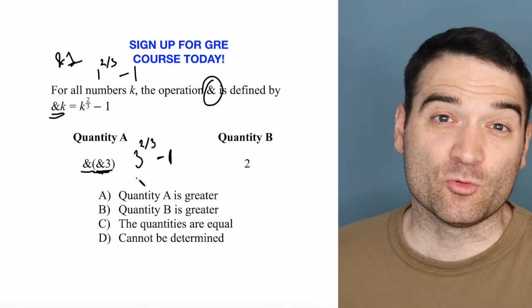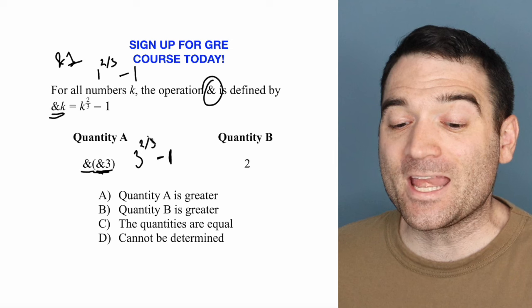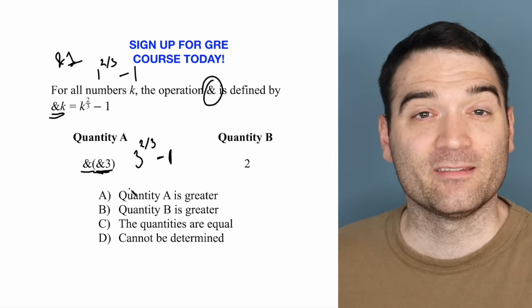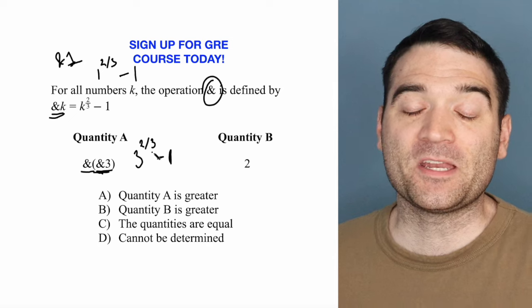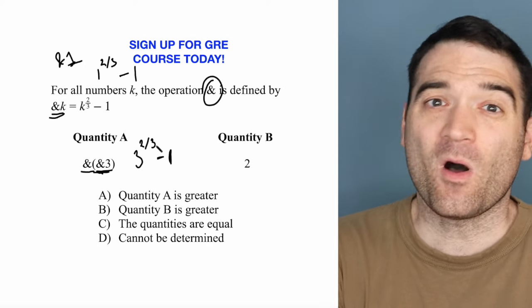Now, my calculator does not have a cube root button. My GRE calculator does not have a cube root button. But I know that this number is less than three. If I raise something to the power of two-thirds, if I raise an integer to the power of two-thirds, it's going to get smaller.